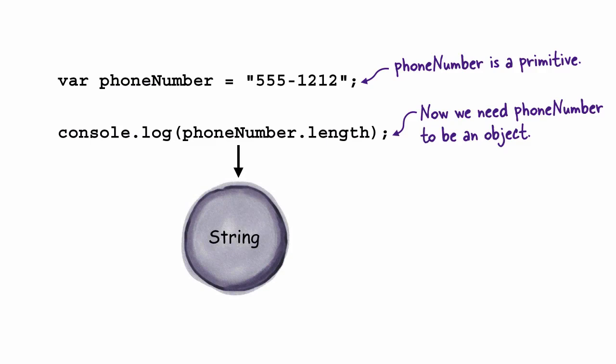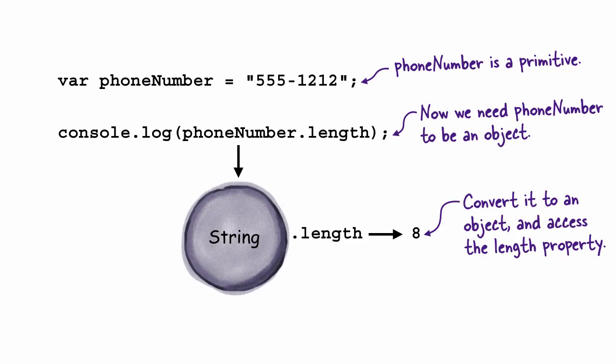So the phoneNumber then gets converted to an object, and once the phoneNumber is a real object, then the property or method we accessed, in this case length, is used and a value is returned, in this case 8. Once that's done, then phoneNumber goes back to just being a regular primitive string again.